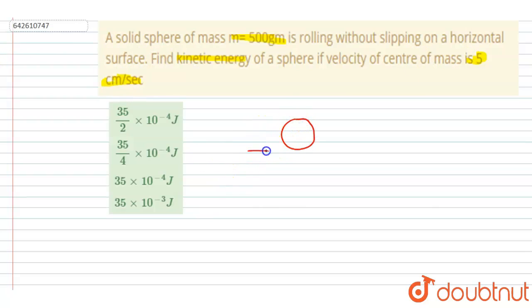...take a solid sphere which is rolling on the ground, then it must be having an angular velocity that will be equals to v by r, where r is the radius of this sphere. So that the point of contact will have the same velocity as that of ground.